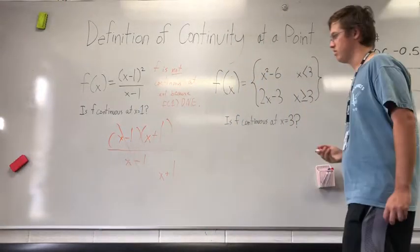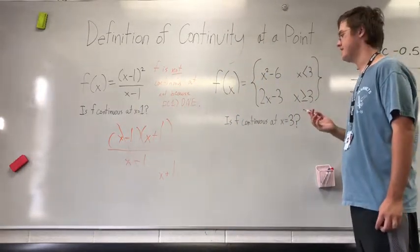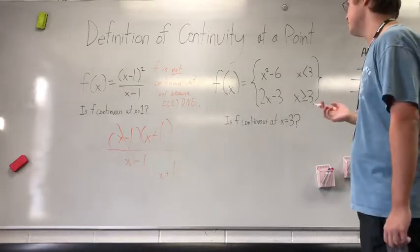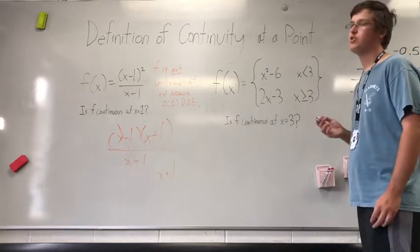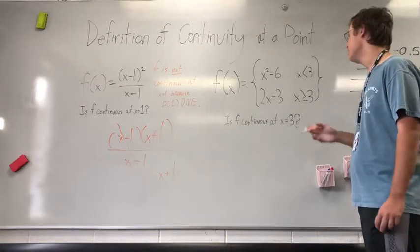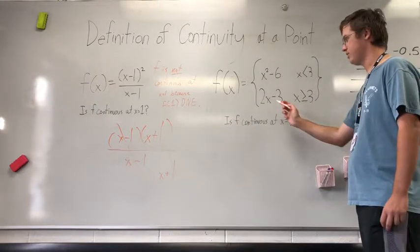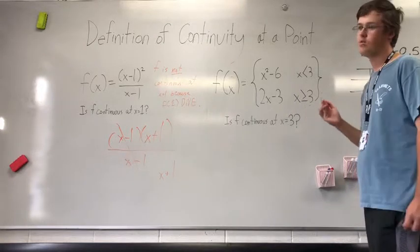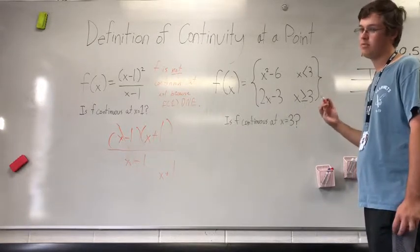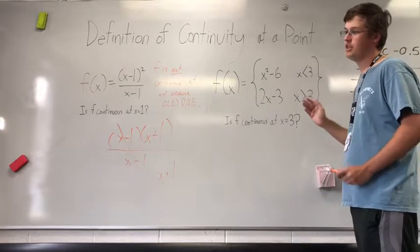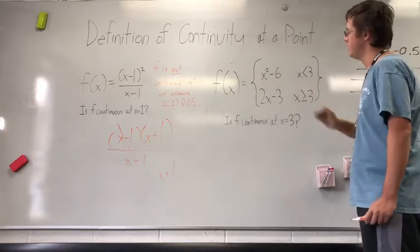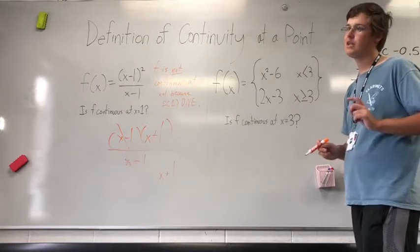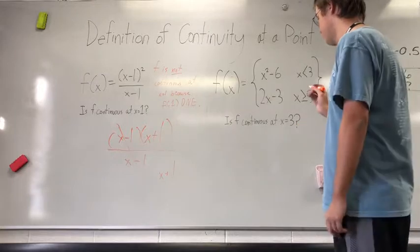Moving on to the next problem, it gives us a piecewise function and asks to see if f is continuous at x equals 3. We can first calculate the actual value of the function at x equals 3. By plugging x equals 3 into the piece 2x minus 3, we can calculate both the right-hand approach of the limit — since that piece applies when x is greater than 3 — and also the defined point at x equals 3.